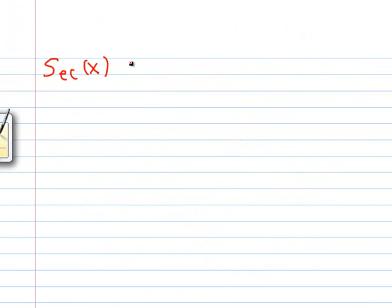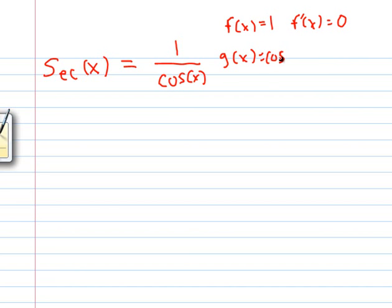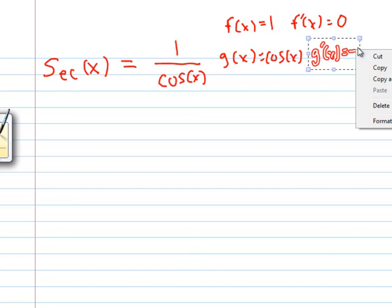And if we want its derivative, we again have to express this as a quotient. So I say 1 over cosine. And let's go through the process again. f of x equals 1, f prime of x equals 0, g of x equals cosine of x, g prime of x, sine equals negative.